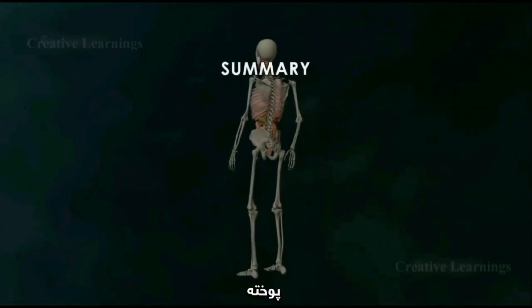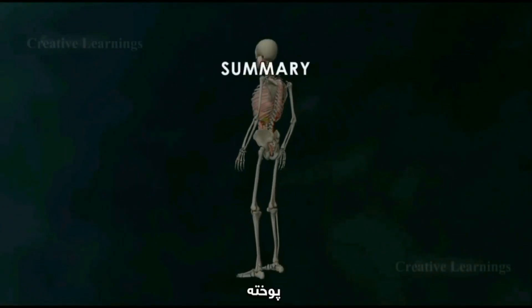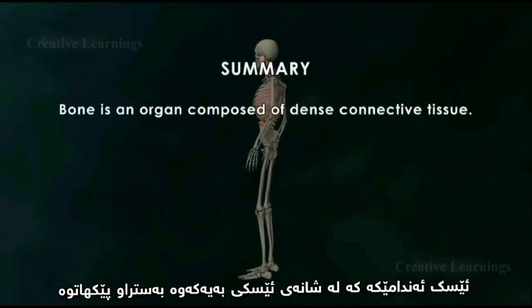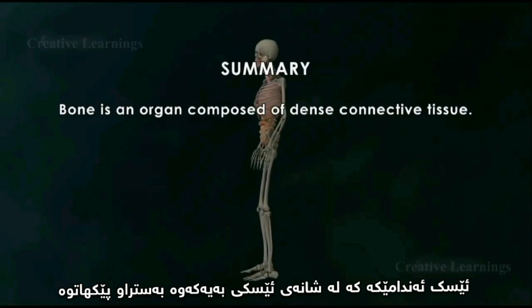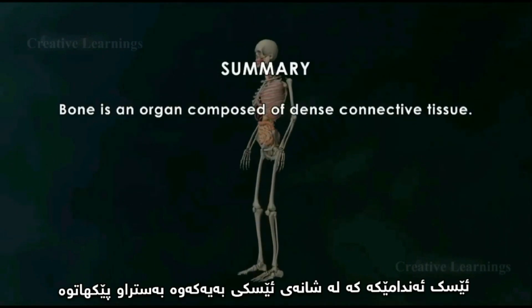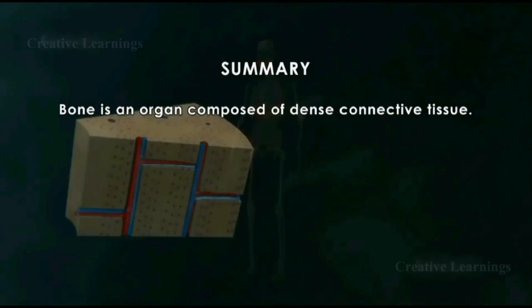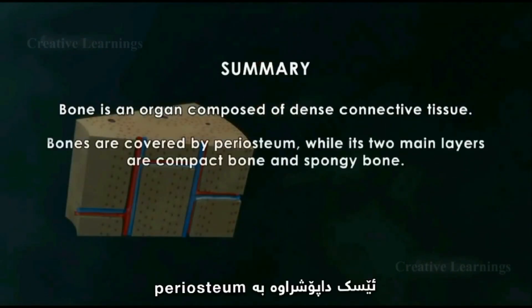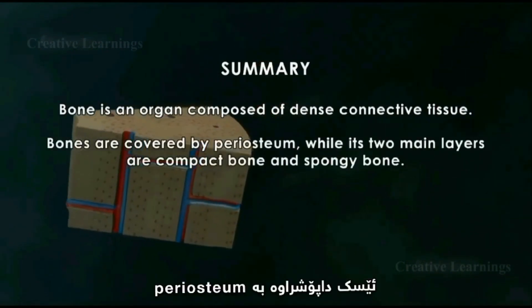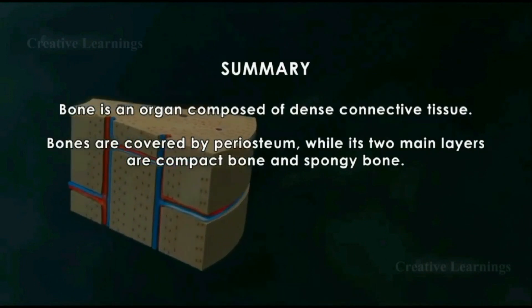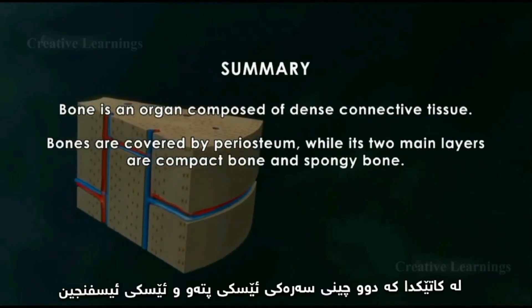Summary. Bone is an organ composed of dense connective tissue. Bones are covered by periosteum, while its two main layers are compact bone and spongy bone.